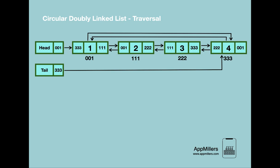In the last lecture we looked at how to insert a new node anywhere in a circular doubly linked list. Now in this video we will learn how to traverse a circular doubly linked list. The idea is very simple: we start from the first node, and the first node is obtained from the head reference, since the head reference points to the first node.